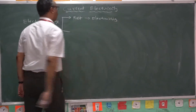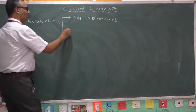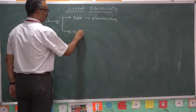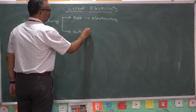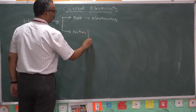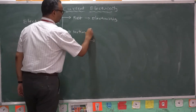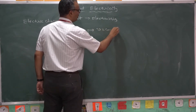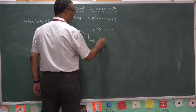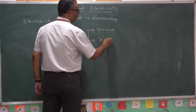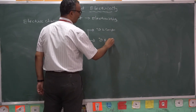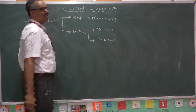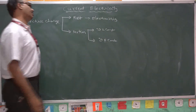Now the charge comes to the state of motion. Motion means here you have two conditions: charge may move with constant speed, or charge may move with variable speed — that means velocity is constant or velocity is not constant.